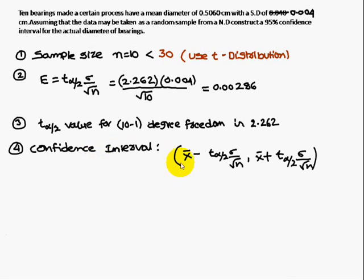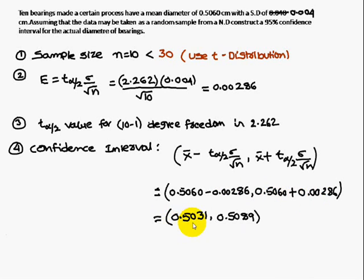Confidence interval is x̄ minus error, x̄ plus error. If you do this you are going to get the x̄ value is 0.5060 minus error, 0.5060 plus error, therefore you are going to get 0.5031, 0.5089.